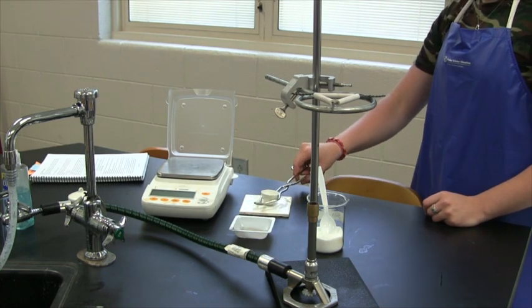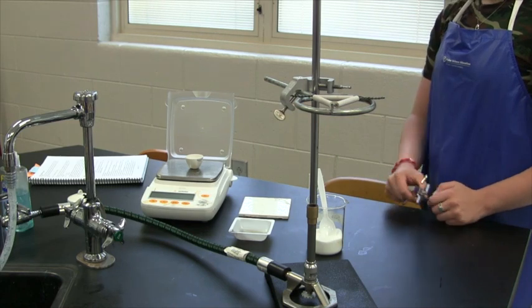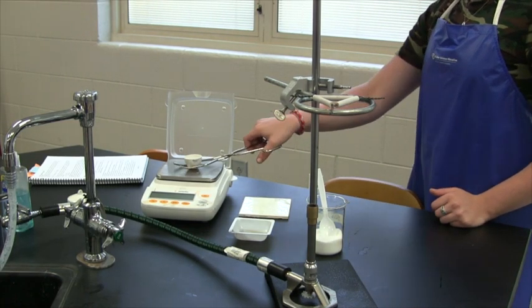Next, you use the crucible tongs and place the crucible back on the balance. Now you'll find the mass of the crucible and the hydrates together.